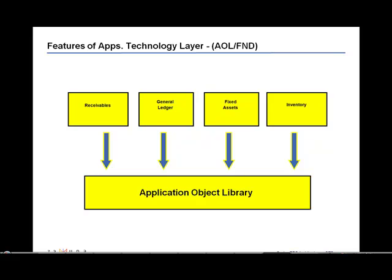If a particular client or organization finds that the system out of the box does not really meet their requirements, the organization will have to make some customizations or modifications so they can fully utilize the system. The components of the Application Object Library enable the organization to create those customizations or to extend Oracle applications to meet those business requirements and specific business needs.